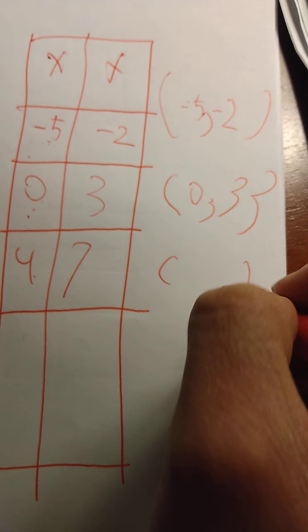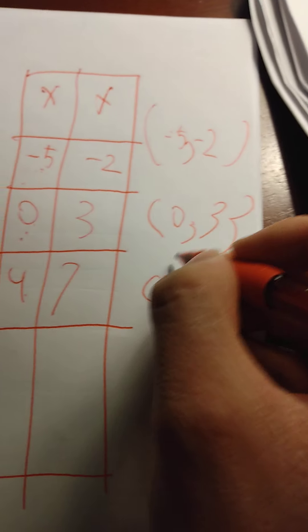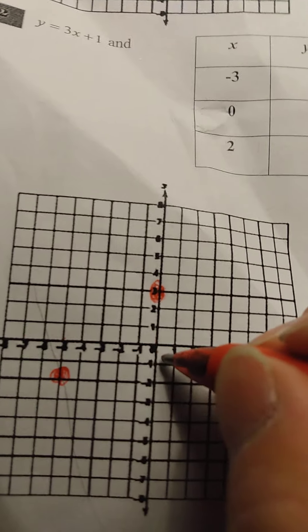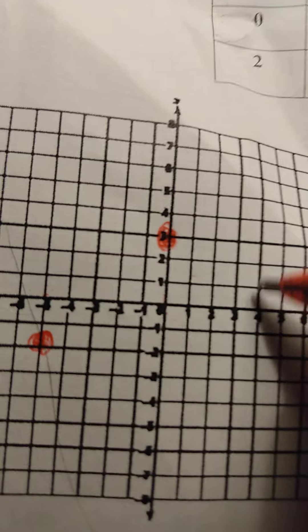And our last point is 4, 7. Because here's x right here, and here's y right here. 1, 2, 3, 4, and 7.